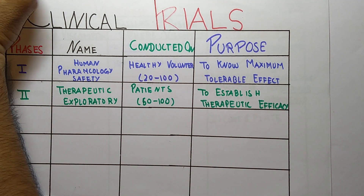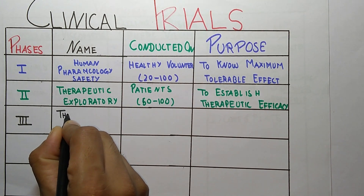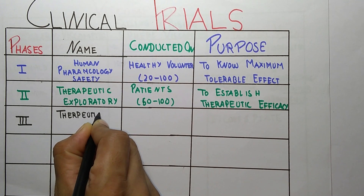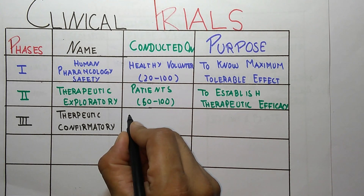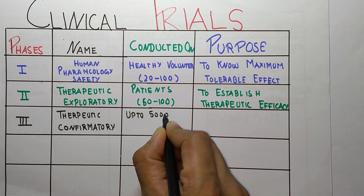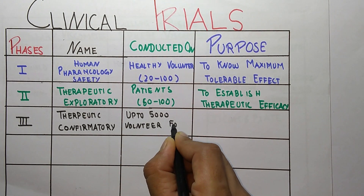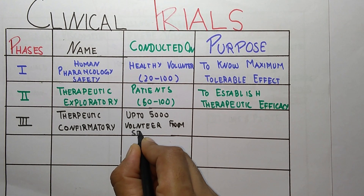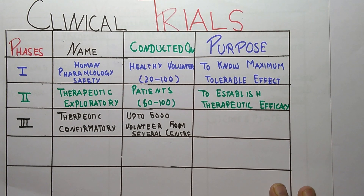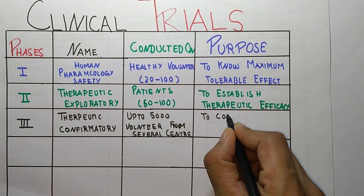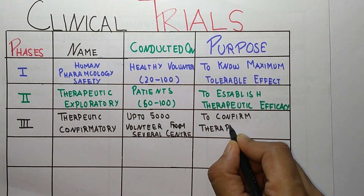The third phase is Therapeutic Confirmatory. It is conducted on up to five thousand volunteers. The purpose of this phase is to confirm therapeutic efficacy.